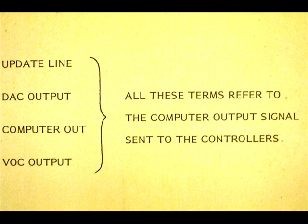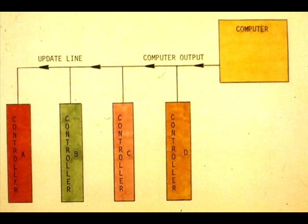The update line is the computer output. It is called other names. The update line is common to all the controllers that the computer services.